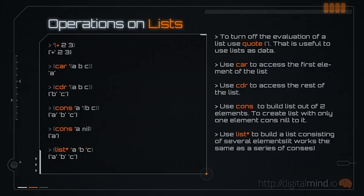Because Hi programs consist of lists, it gives them numerous awesome advantages, like being able to write powerful macros — that is, code that can write code. You'll understand why that is so amazing later. Now let's look at the basic operations on lists. When you put a quote in front of a list, it turns off the evaluation. For example, instead of computing the result of adding two numbers, it simply returns the list itself, which allows you to use lists as data.